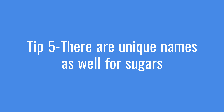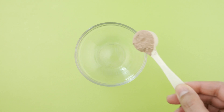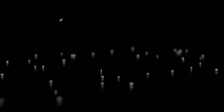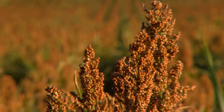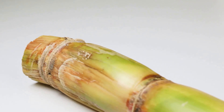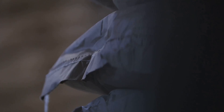Some added sugars have unique names that aren't as obvious. For example, maltodextrin, often used as a sweetener; rapadura, made from sugarcane; siling syrup, which comes from dates; sorghum syrup from sorghum grass; and sucanat, also from sugarcane.